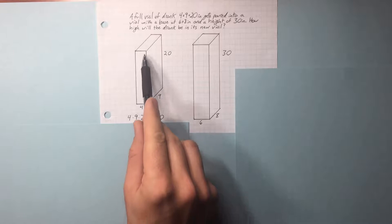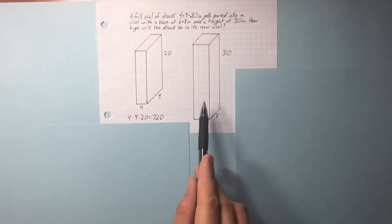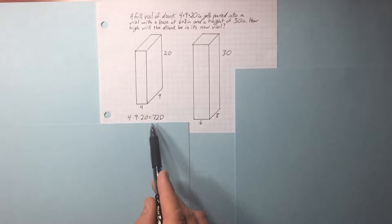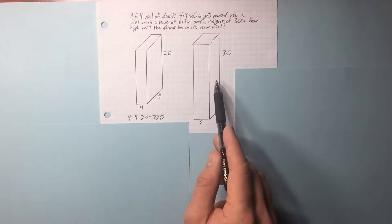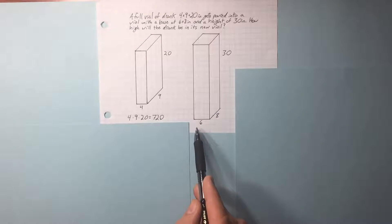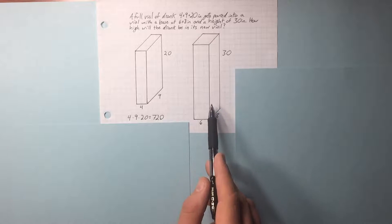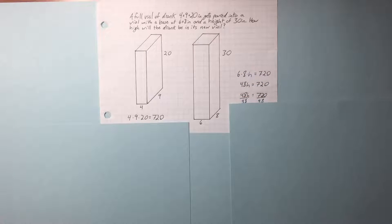We poured all of that into here. How high will it go in its new container? We have the volume of liquid that's in here — 720. We have the base. We don't have the height. We're only missing one variable. Multiplication, division. The height is 15.